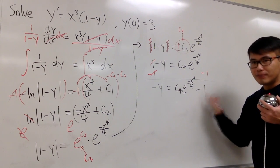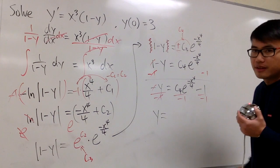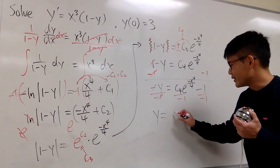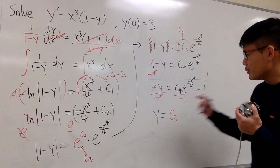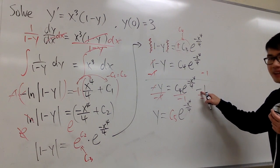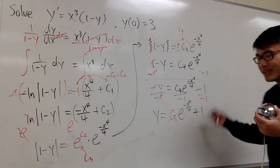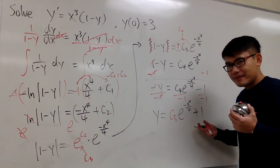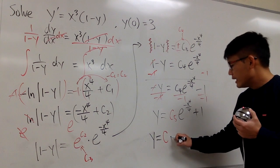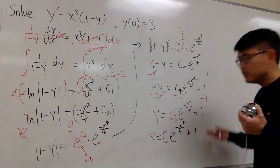The minus 1 is not in the exponent — it's just a regular minus 1. Now divide everything by negative 1 so we get positive y by itself. c4 divided by negative 1 is just another constant — let's call it c5. So y equals c5 times e to the negative x to the fourth power over 4, plus 1. This c5 is our legitimate c, so the general solution is y equals c times e to the negative x to the fourth power over 4, plus 1.